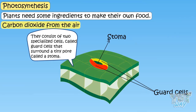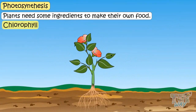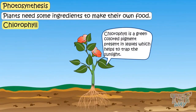The next ingredient is chlorophyll. It is a green pigment which is present in the leaves. And this green pigment, chlorophyll, helps the plant to trap the sunlight.